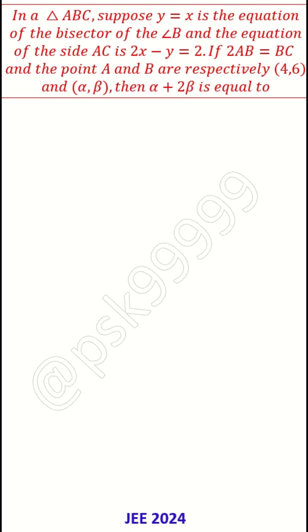First, draw the diagram with all the information given. ABC is the triangle, A is (4,6), B is (α,β), and there is an angular bisector which is y = x. AC is 2x - y = 2. This is the information given, and 2AB = BC.